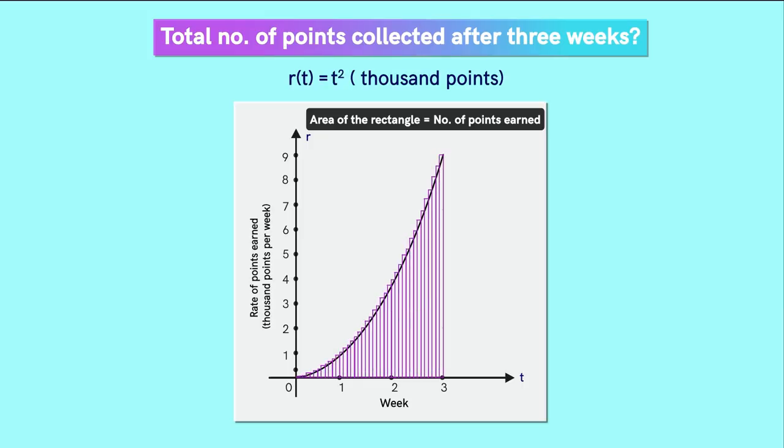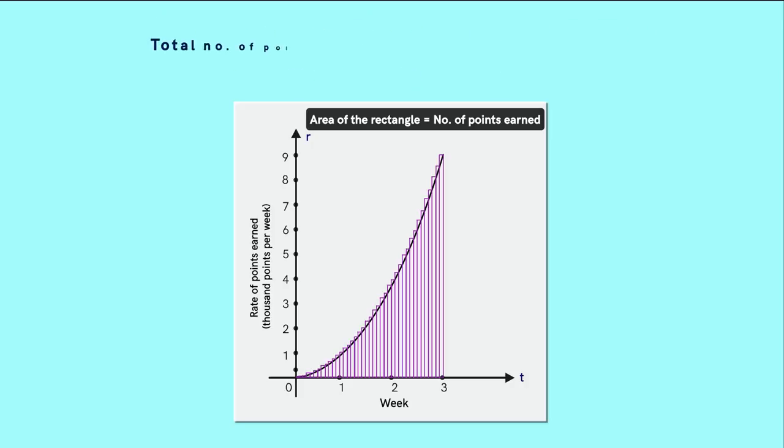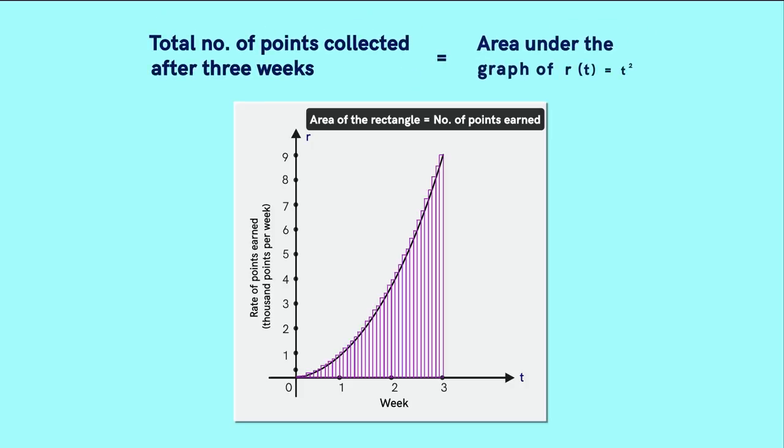As we keep decreasing the width of the rectangles further, we see that this total area will approach the area under this curve. So we see that the problem of finding the total number of reward points becomes the problem of finding the area under the graph of this function. This is the connection between geometry and addition we mentioned earlier.